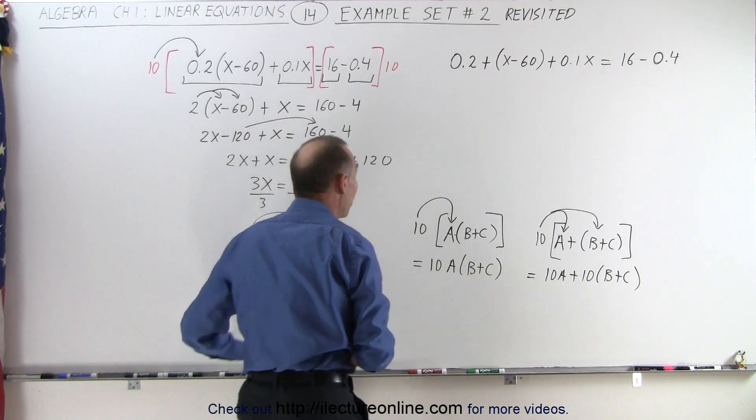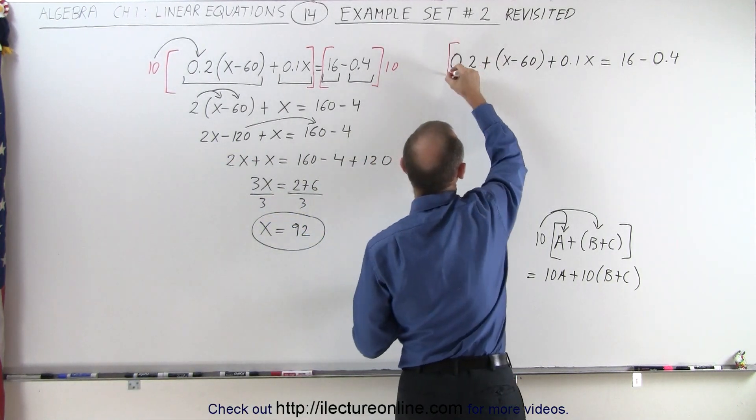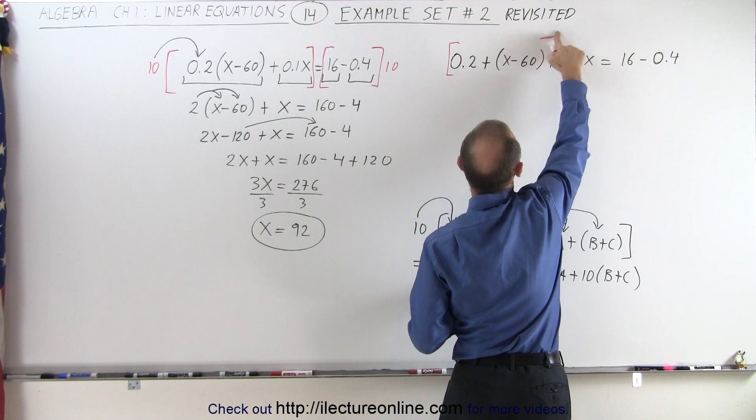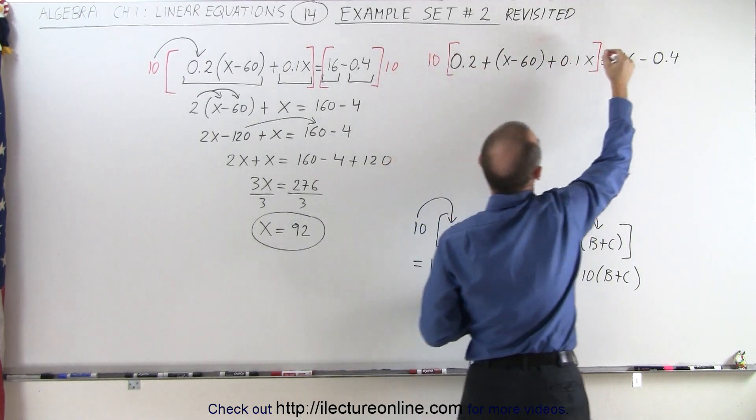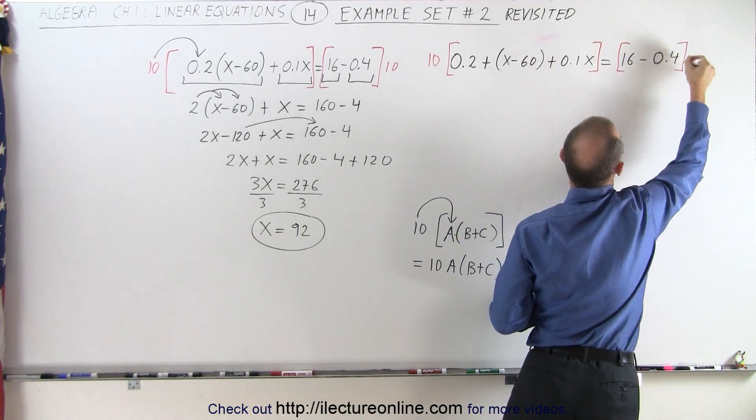Again we're going to multiply both sides of the equation by 10 to get rid of the decimal. We need to include the whole thing here. Let's go over here. So multiply this times 10 and over here multiply this by 10 as well.